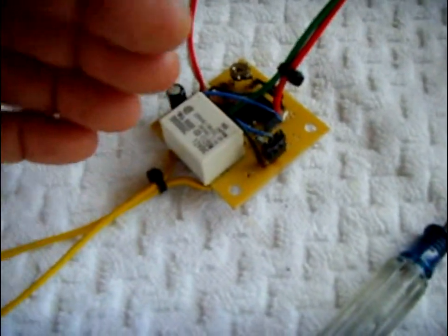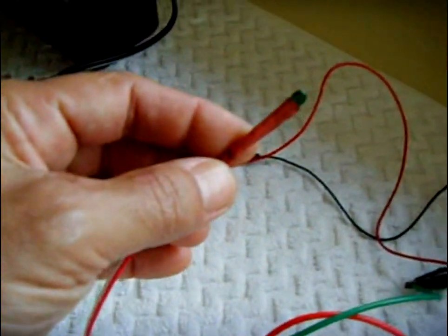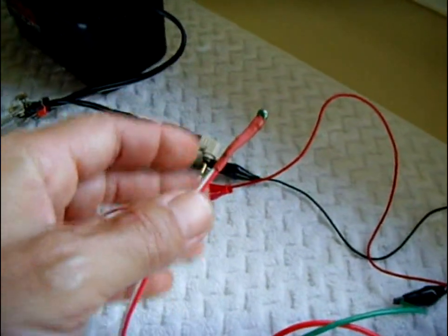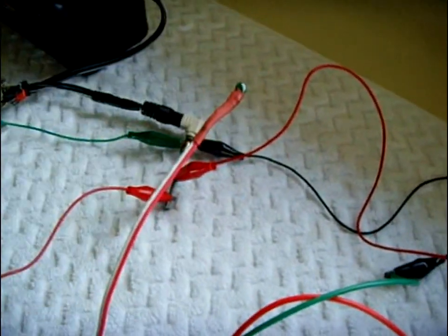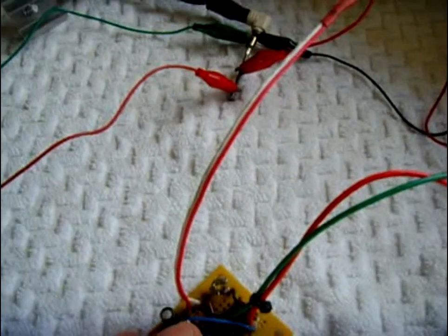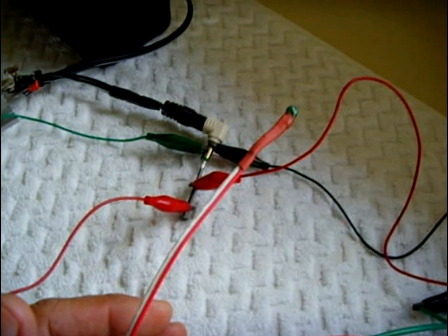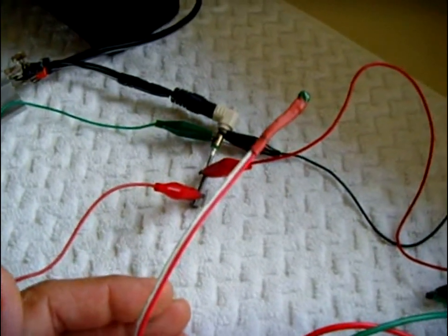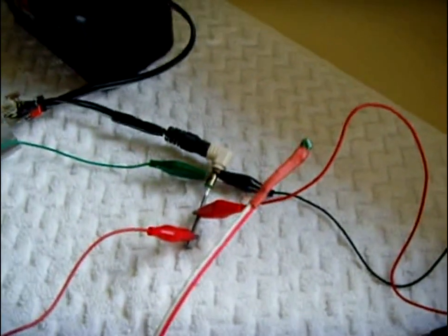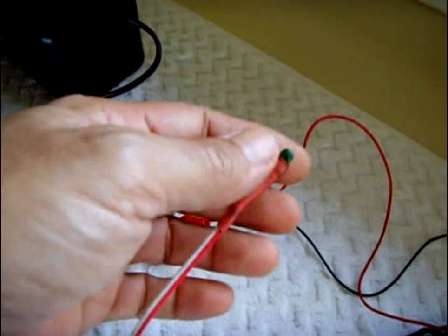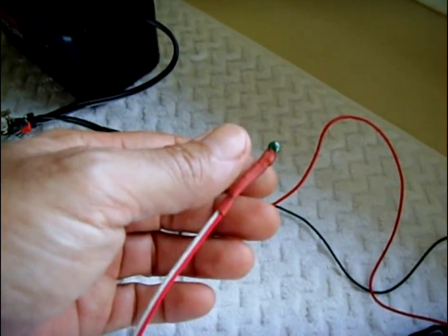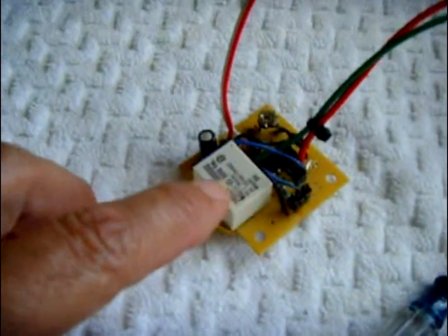As this thermistor right here, which is a 10k that I used, detects heat, it'll trigger the relay. So this would be good for cooling, like on your car, a thermostat for a fan or a computer fan. You put this where you want to monitor the temperature, and if it gets too hot, this relay will activate, turning on a fan.